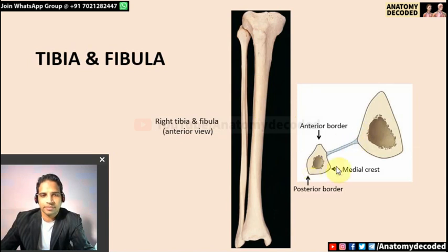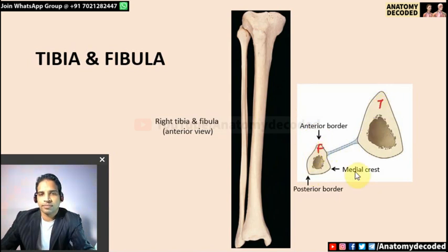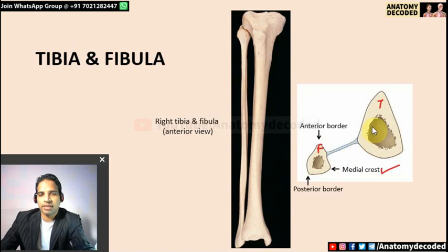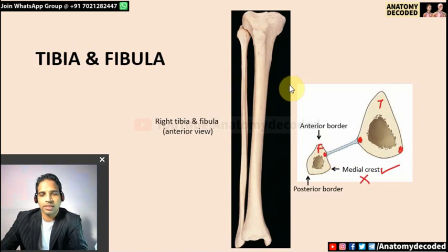To understand borders and surfaces, the cross-section of tibia and fibula is important. Viewed from the anterior aspect: the medial bone is tibia and the lateral is fibula. For fibula, understanding the medial crest is important, as it adds to confusion in borders and surfaces. The interosseous membrane attaches on the medial border of fibula and the lateral border of tibia.